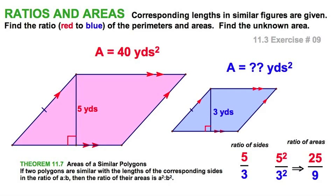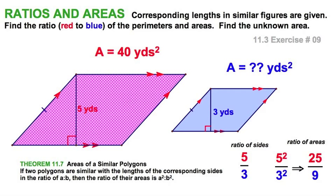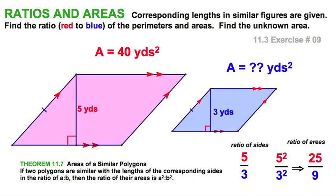5 squared, 25. 3 squared, 9. So the ratio of the areas, 25 parts to 9 parts. And that's going to be sufficient for us to answer this question.